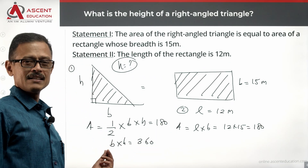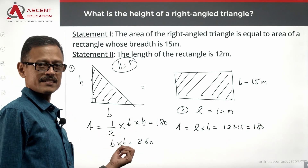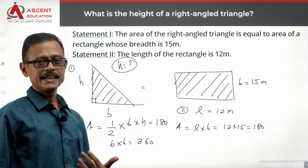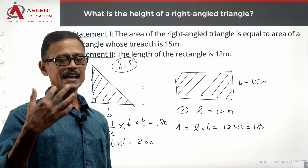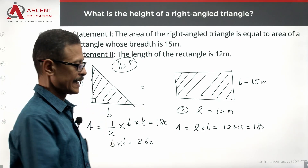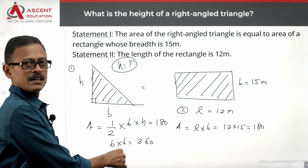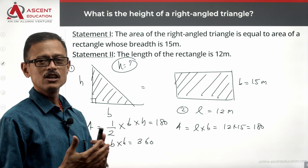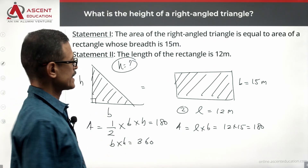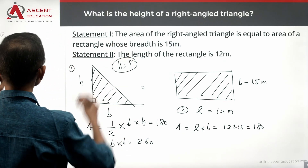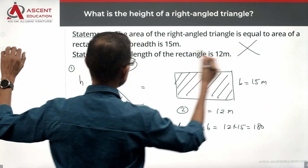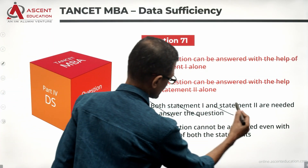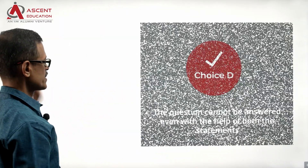So base times height equals 2 times 180, which is 360. For example, if the base is 73, the height is different; if the base is 20, the height equals 18. We get different values for height depending on what the base is. Without knowing the base of the triangle, we cannot find a unique value for the height. Despite combining the statements, we don't have a unique value, so the statements together are not sufficient. The answer is choice D.